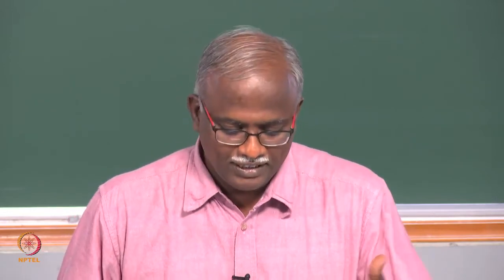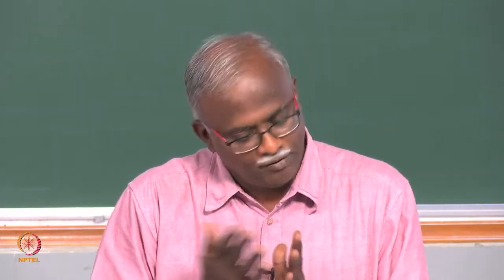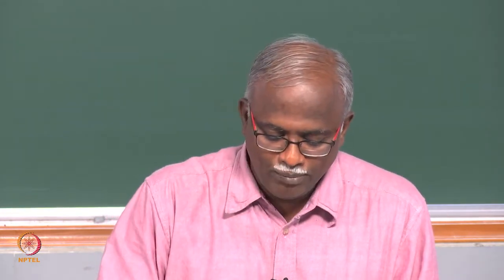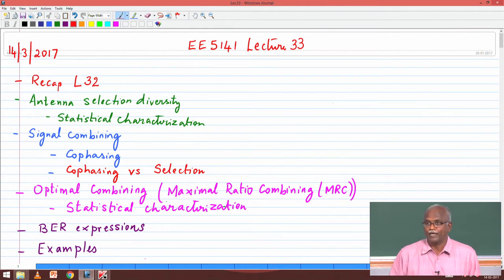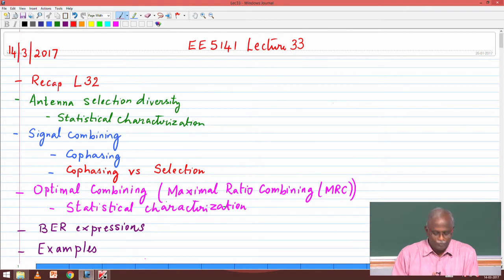Good evening, we begin lecture 33. The flow of today's lecture will be completion of our discussion on selection diversity, concluding with mathematical characterization. Antenna selection is one way of benefiting from multiple antennas. The better or more enhanced way of exploiting diversity is to combine the signals. We made a statement without validation that optimal combining should give us the sum of the SNRs of each of the different antenna signals. Today's lecture will validate or prove that result.